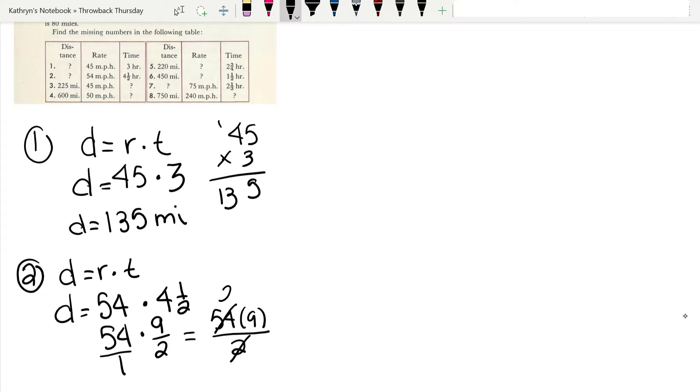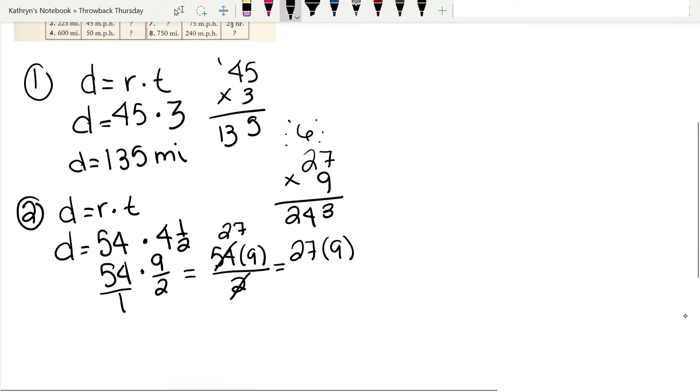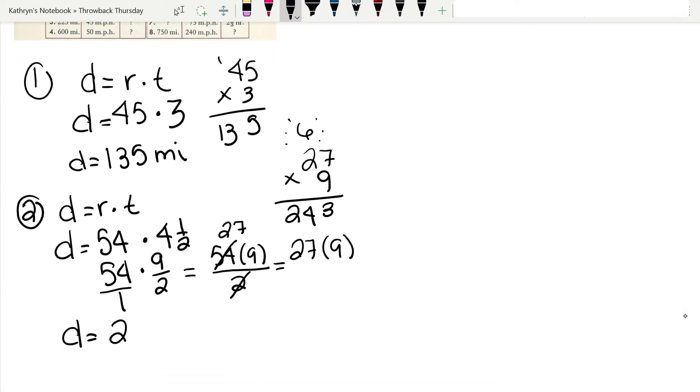Now we have 27 times 9. 7 times 9 is 63, 9 times 2 is 18, carrying gives us 24. So the distance is going to be 243 miles. Now that was pretty cool.